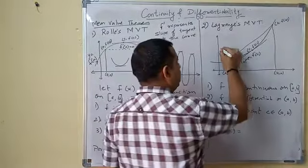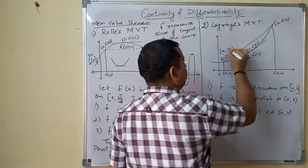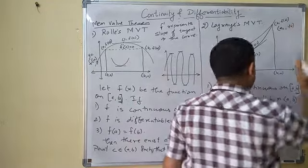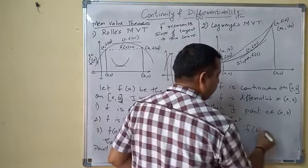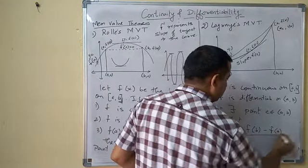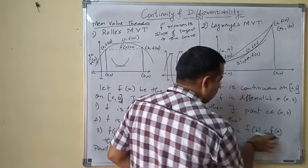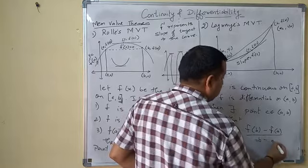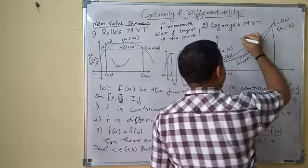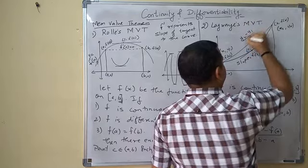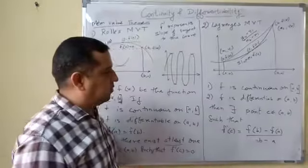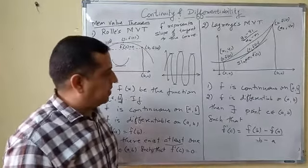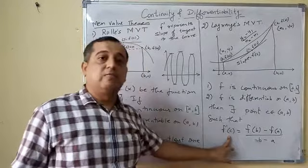If we consider (x1, y1) and (x2, y2), then slope is (y2 - y1)/(x2 - x1). What is the slope of this line? It will be (y2 - y1)/(x2 - x1). So you get f'(c) equals (f(b) - f(a))/(b - a). This is Lagrange's Mean Value Theorem.